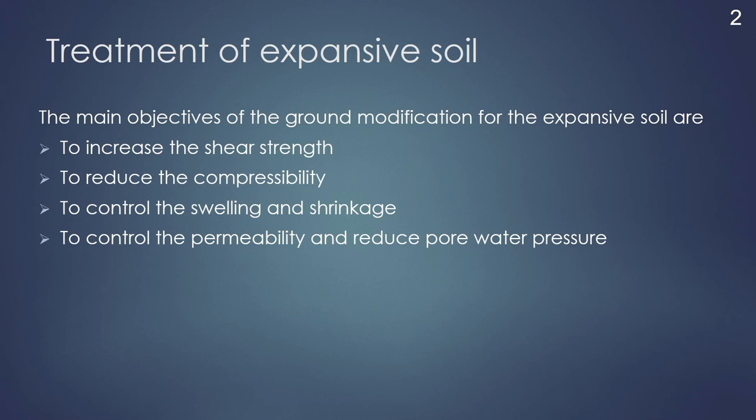The fourth objective is to control its permeability and pore water pressure. As the permeability of an expansive soil is very less, the water will take a lot of time to dissipate, or the pore water pressure takes a lot of time to get dissipated. Therefore, it will undergo settlement for a large time. Hence, the last objective of ground modification technique for an expansive soil is to control its permeability so that settlement can be achieved in less time.